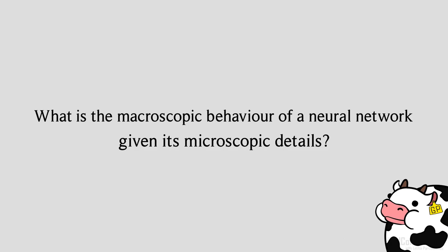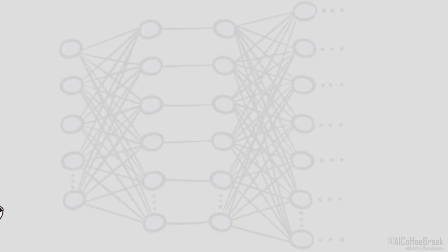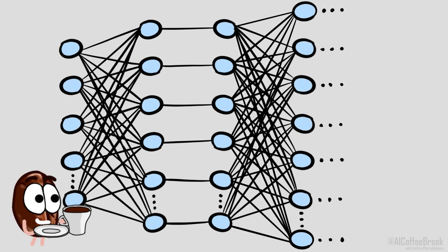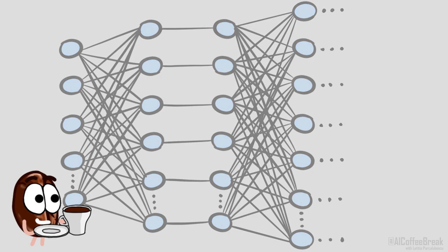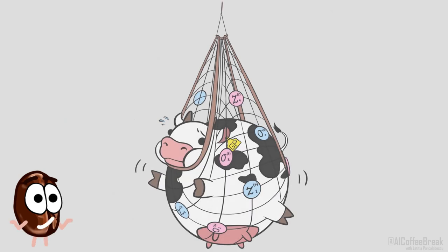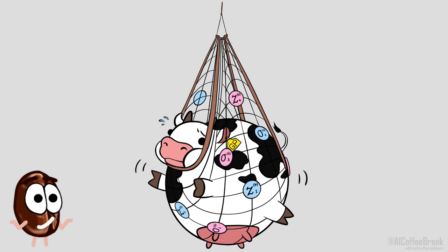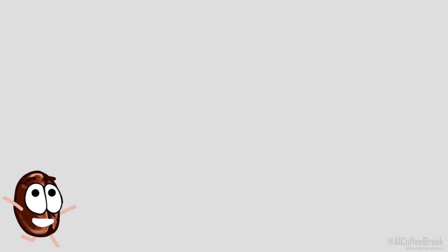What is the macroscopic behavior of the neural network, given its microscopic details? Finding the neural network equivalent of the fundamental laws of thermodynamics could help the development of intelligence in silico, in the same way understanding thermodynamics unleashed the full power of the steam engine during the industrial revolution. Of course, this might probably just be wishful thinking, and there are many differences between neural networks and physics, but the theory that we are going to discuss in this video is a step in that direction.